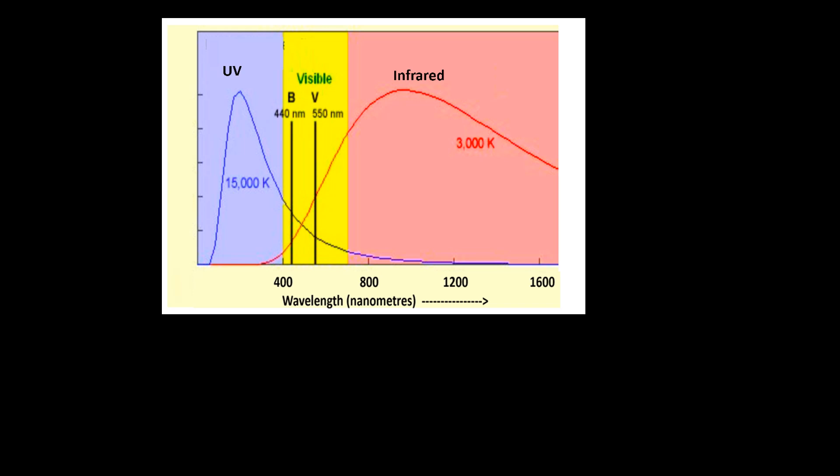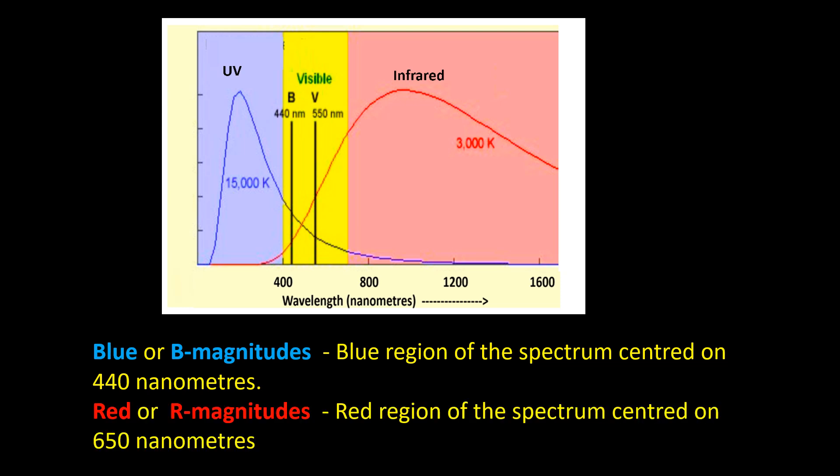For this reason, astronomers also use magnitudes measured at other wavelengths. Some examples are blue or B-magnitudes which are based upon light received over a range of wavelengths in the blue region of the spectrum centered on 440 nanometers, red or R magnitudes which are based upon light received over a range of wavelengths in the red region of the spectrum centered on 650 nanometers.